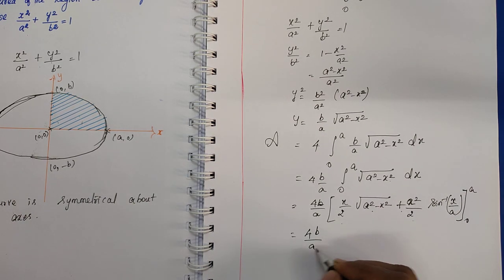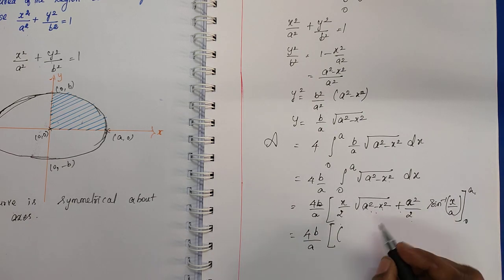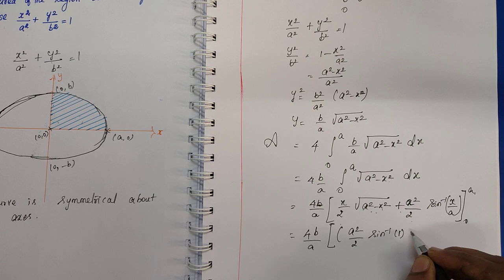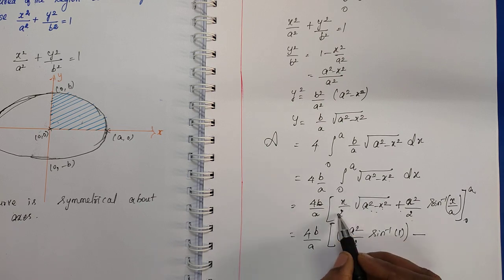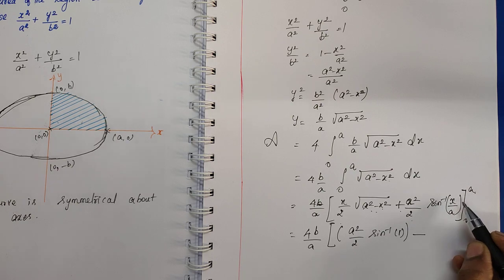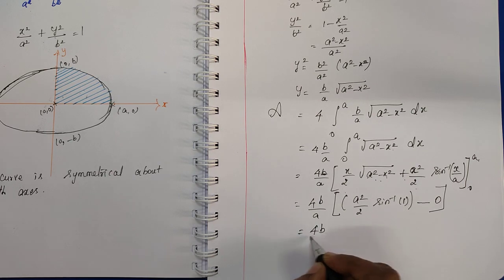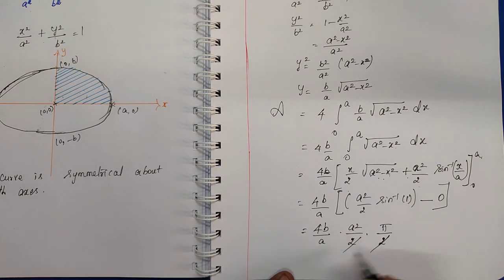Applying the upper limit x = a: the first term becomes 0 since a² − a² = 0, and the second term gives a²/2 × sin⁻¹(a/a) = a²/2 × sin⁻¹(1) = a²/2 × π/2. Applying the lower limit x = 0: both terms become 0 since sin⁻¹(0) = 0. So the result is 4(b/a) × a²/2 × π/2, and cancelling gives πab.